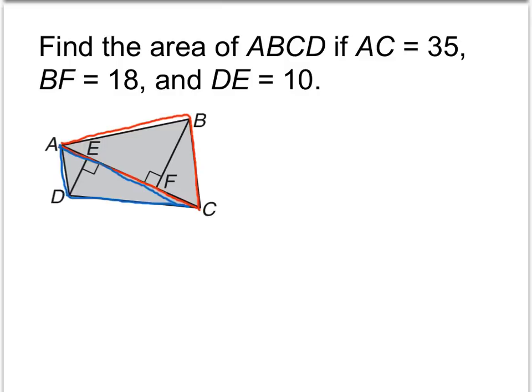So if we consider the red triangle, that is triangle ABC, for that triangle, we see that its base could be AC. In other words, its base is 35, and the height, remember the height is perpendicular to the base, and so the height can be BF, so times 18. And 1 half times 35 times 18 is 315 square units.